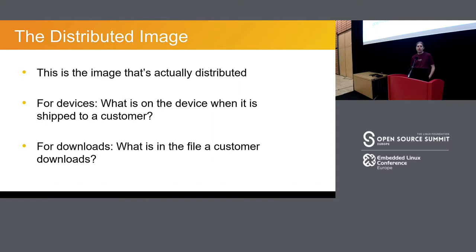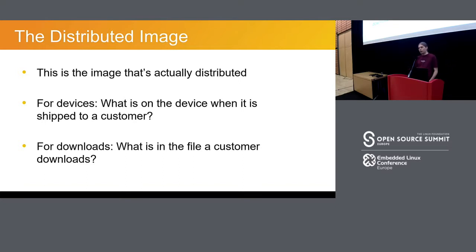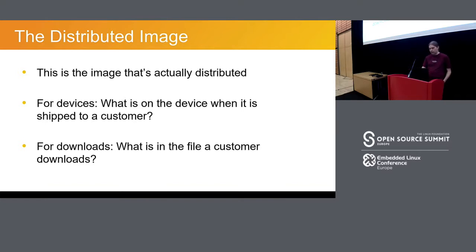The thing I want to highlight early on is what I'm going to call the distributed image. This is the image that you are actually distributing to your customers, and it may not be the image that you build initially. You need to think about when you sell a device and ship it to a customer: what is the actual software on that device when it goes out the door? If you're uploading software to a website, think about what is actually in the file the customer downloads. This may be slightly different to what you're initially building.